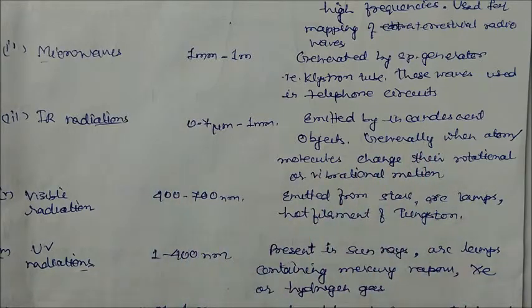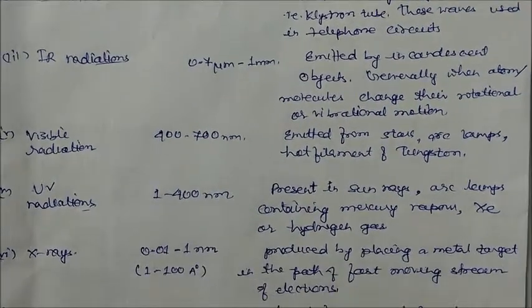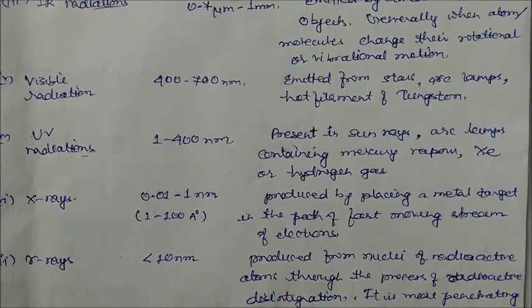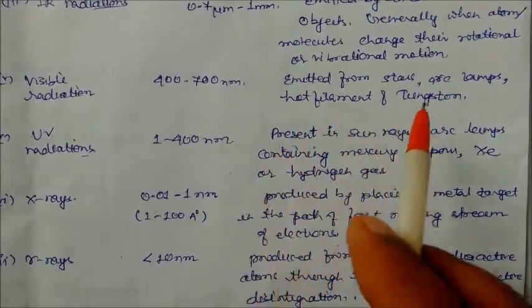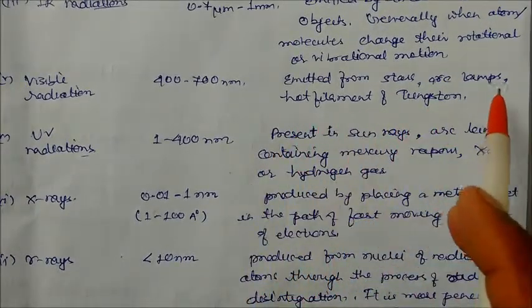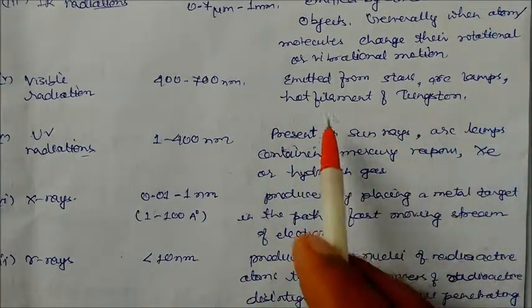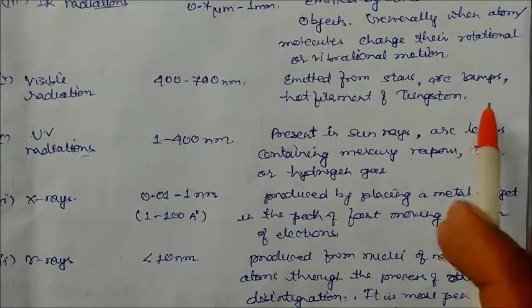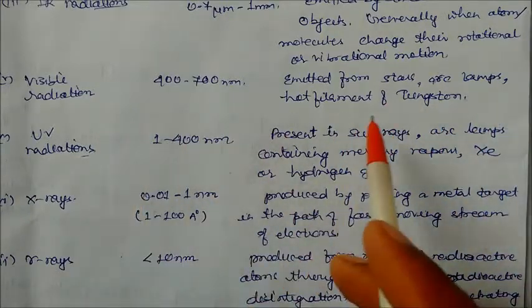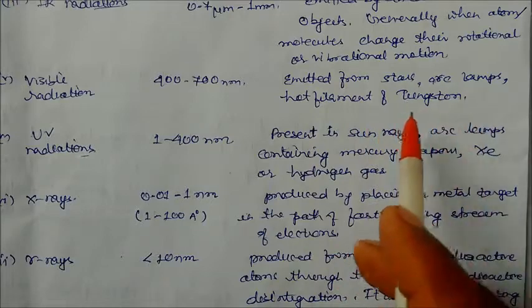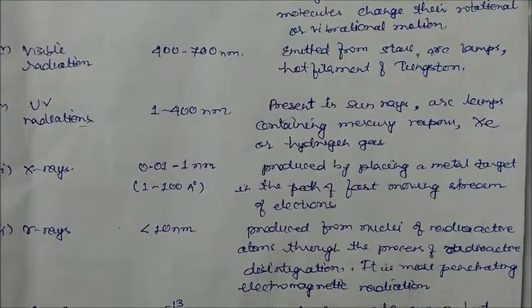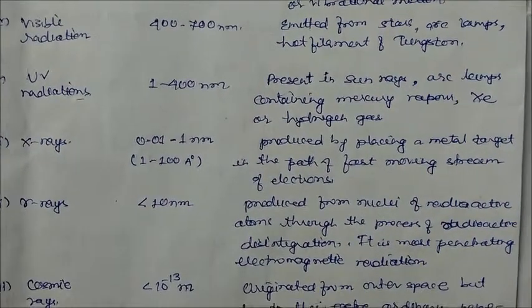Visible radiation ranges from 400 to 700 nanometers. It is emitted from stars, arc lamps, and hot filaments of tungsten.